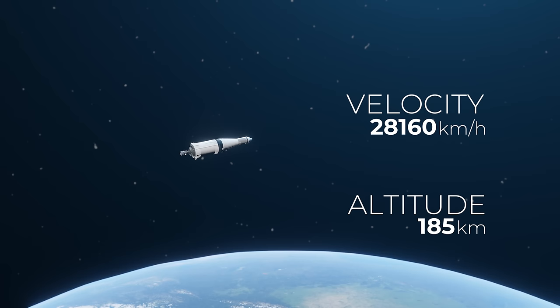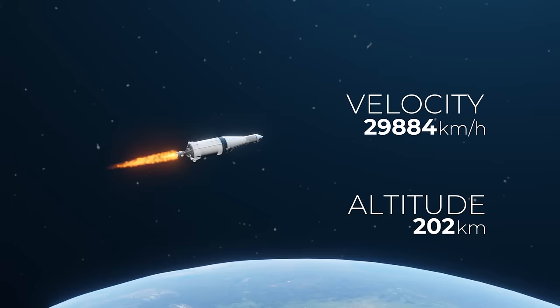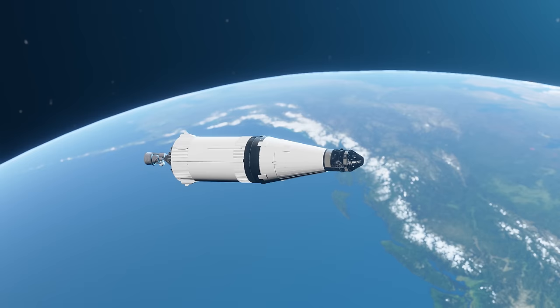Once it was in a stable orbit, the third stage would be fired up again to perform the translunar injection burn, sending the rocket and crew on a trajectory to intersect the Moon. Once the Apollo crew were safely on their way to the Moon, the third stage would separate and NASA would try to discard it.